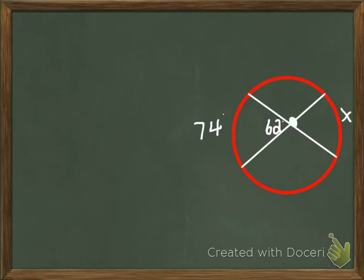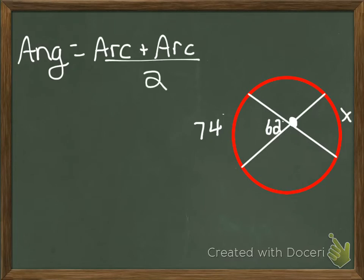So that means that I am going to add the two arcs together, divide them by 2, and that's going to give me my angle. So remember, angle equals arc plus arc divided by 2. So I'm going to always plug into the formula so you'll know how to solve for x.